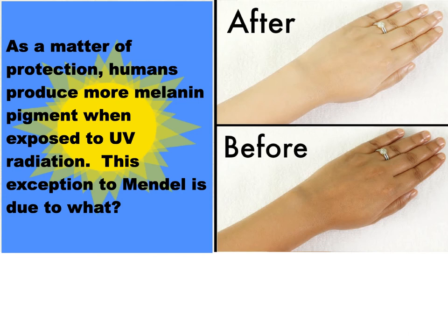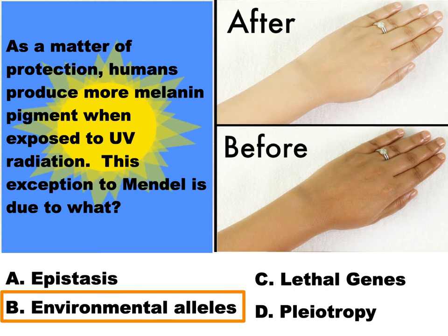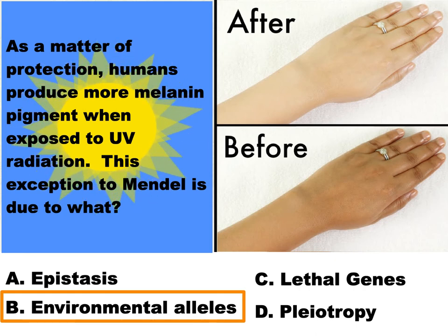Humans produce more melanin — skin pigment — when exposed to UV radiation, which is another example of environmental alleles. So that's the environmental stuff causing this adjustment in our gene expression.